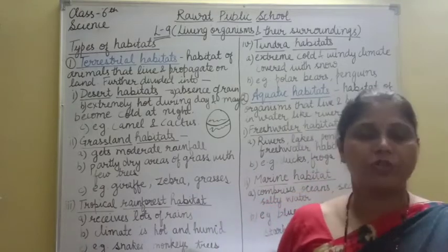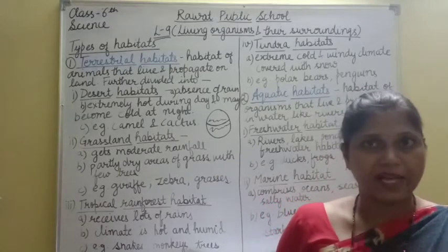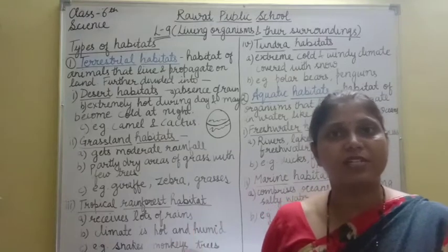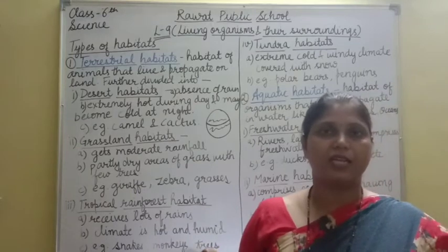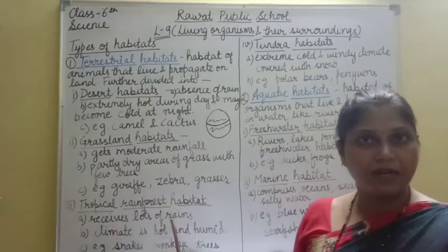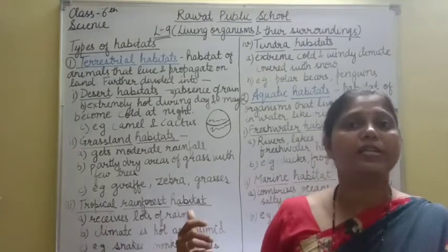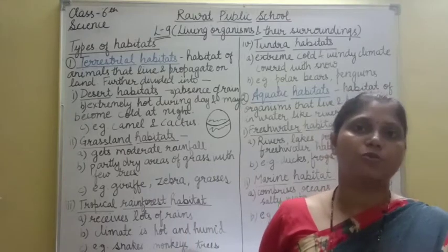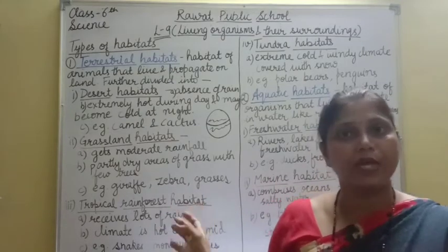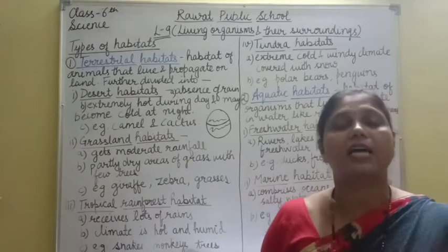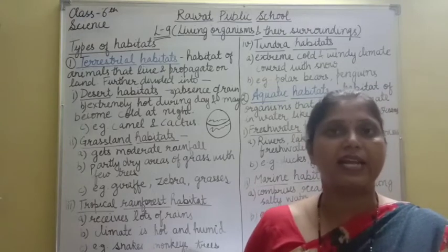Tropical rainforest का climate hot and humid है. आपने देखा होगा जब भी बारिश होती है, जैसे आजकल rainy season चल रहा है, तो climate बहुत ज़्यादा humid रहता है — air में बहुत ज़्यादा moisture present होता है, जिसकी वजह से body sticky लगने लगती है. क्योंकि यहां बहुत ज़्यादा rain होती है, इसलिए climate hot and humid है, and this climate is suitable for most of the animals to survive.